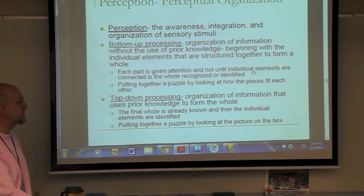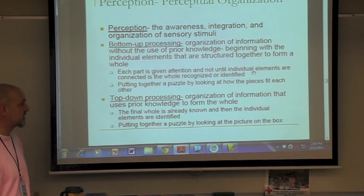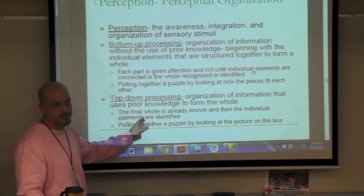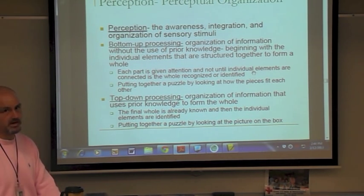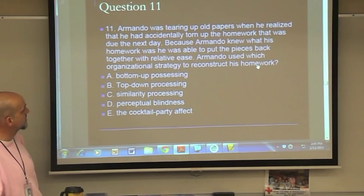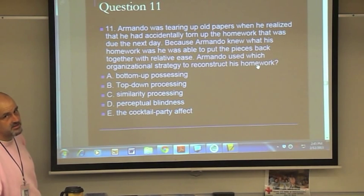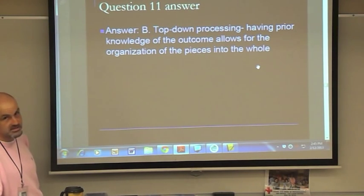Top-down processing is the organization of information using prior knowledge to form the whole. The final whole is already known, and then the individual elements are identified. Putting together a puzzle by looking at the picture on the box is an example — you use prior knowledge of what the image looks like, then identify the parts. For example, you picture a burger in your mind, then identify the individual parts of it.